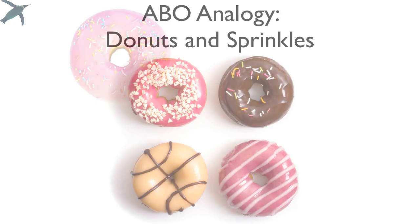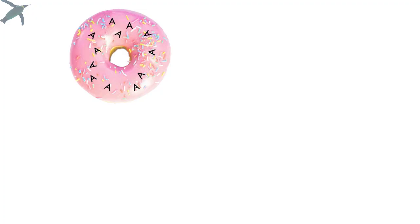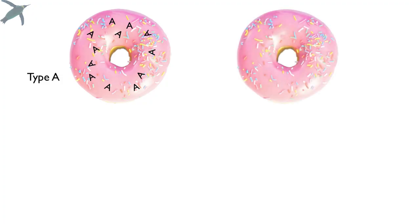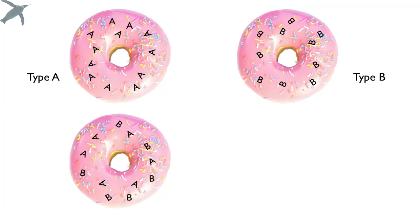Hopefully we'll make some sense of this. Some people have donuts that have on their surface little sprinkles that look like A's — we're going to call those people type A. Some people have donuts that have sprinkles on them that are little B's, and we're going to call those people type B. Some people have donuts and they like it all, so they have both A and B sprinkles on top — we're going to call those people AB.